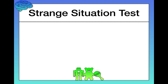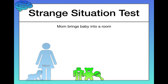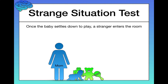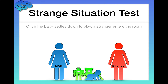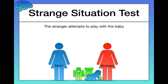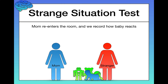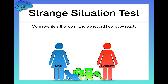You can do this in any strange environment — an environment that the child is not familiar with. To start, mom brings the baby into a room. This doesn't have to be mom; it can be dad or any caregiver. It's basically just to test the relationship between two people. So mom brings baby into a novel environment. Once the baby settles down to play, a stranger enters the room. The stranger attempts to play with the baby to get them more comfortable. Then mom gets a cue to leave the room, leaving the baby alone with the stranger. Mom re-enters the room after a few minutes and we record how the baby reacts — this is the first key measurement of the attachment between mom and baby.